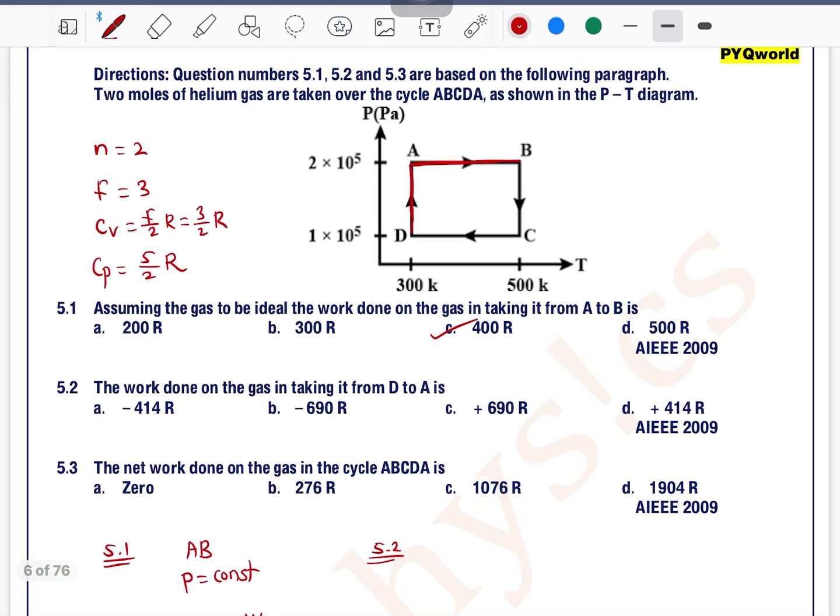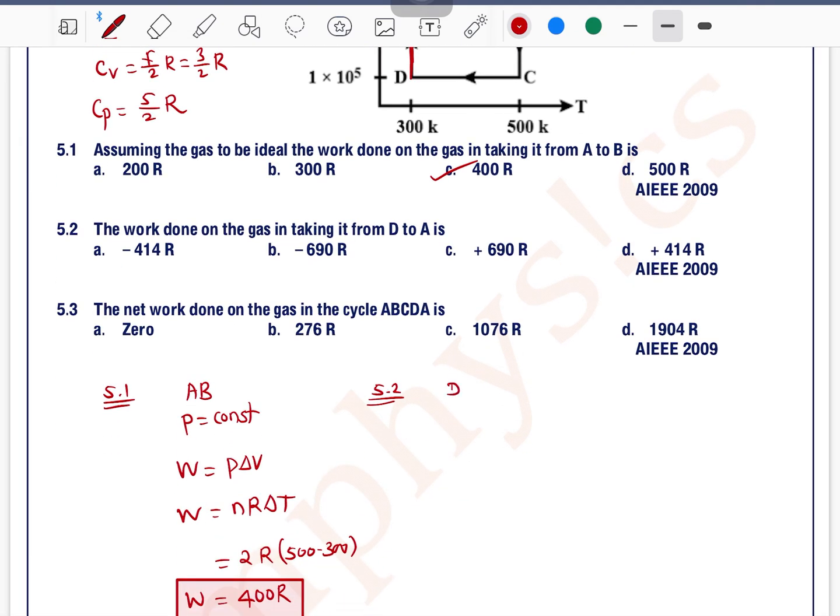Now for question 5.2: the work done on the gas in taking it from D to A. D to A means temperature is constant. Process D to A—temperature constant means isothermal.